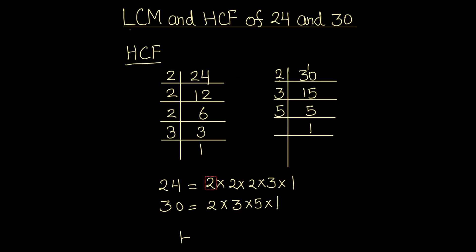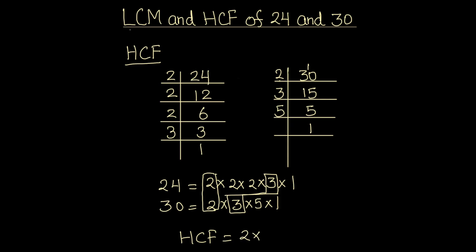For finding the HCF, we are going to find the common factors between the two numbers. We can see that 2 is common to both numbers, so 2 is a common factor. And 3 is also common to both numbers, so 3 is a common factor. For the HCF, we take the product of these common factors.